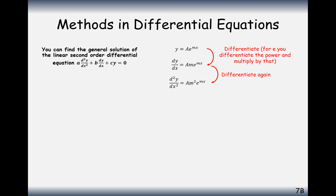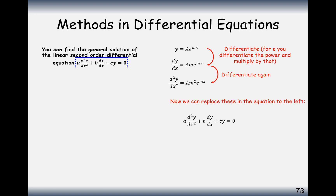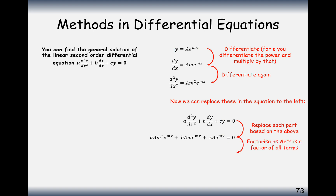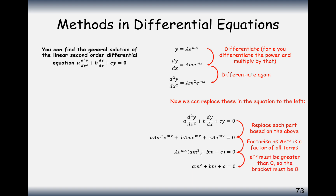Let's plug this into the second order differential equation — replacing the second derivative, the first derivative, and y. We can factorise out e to the mx, and also factorise out A, since A and e to the mx are in every term. This gives A e to the mx times (m squared + bm + c) equals zero. Since e to any power never equals zero — it's always above the x-axis — it must be the bracket that equals zero.